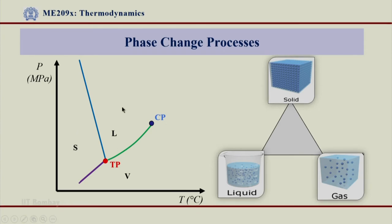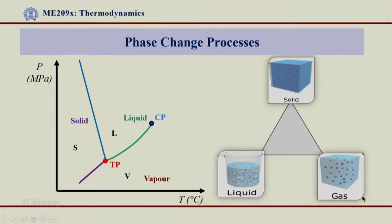What I want to show you now are the phase change processes from solid to liquid, liquid to vapor, solid to vapor, and what are the different names for these processes, which most of you know. We know in this crooked Y or P-T diagram we have solid here, liquid here and vapor here. Similarly, I have shown solid, liquid and gas at the vertices of this triangle.